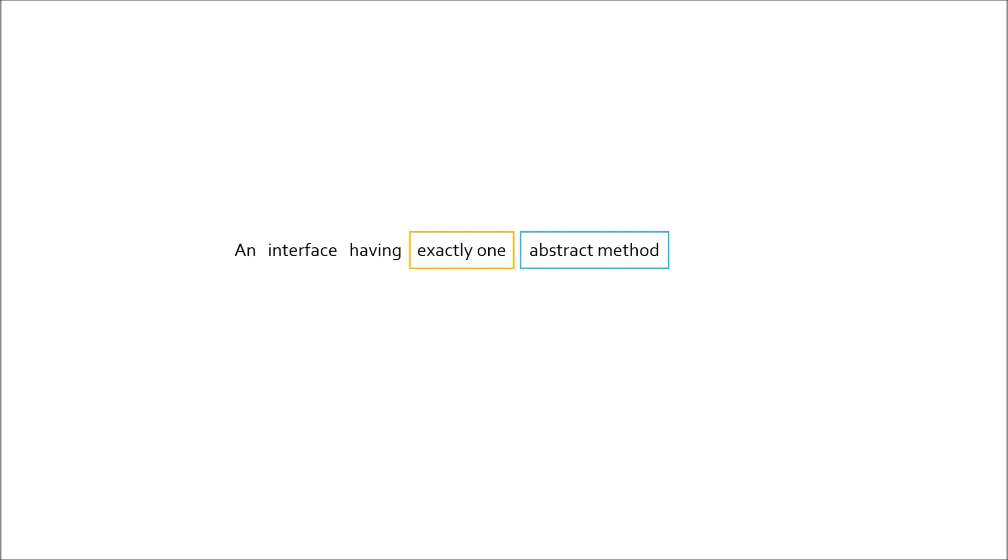Let's see an example. Here I have a package called com.byteprogramming and an interface within this package — ByteProgram — which has a method called 'concept'. In an interface, all methods are by default public and abstract, so 'concept' is an abstract method. The count of abstract methods in ByteProgram is one, so ByteProgram can be considered a functional interface.